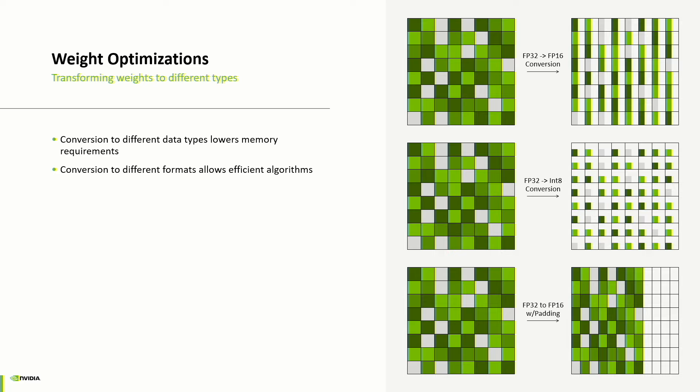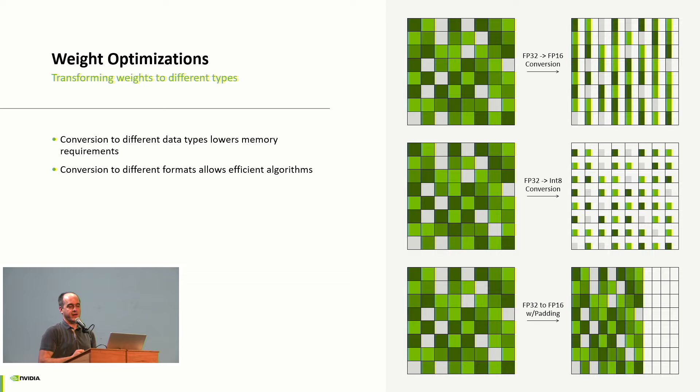Another optimization is weights optimization: transforming the weights into a smaller data type. Converting FP32 to FP16 can have some precision loss but is normally acceptable. The harder part is converting to INT8 correctly — that's the quantization aspect. One of the key benefits is reduced memory usage.